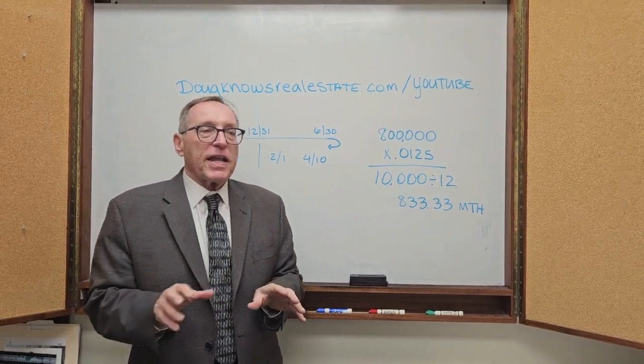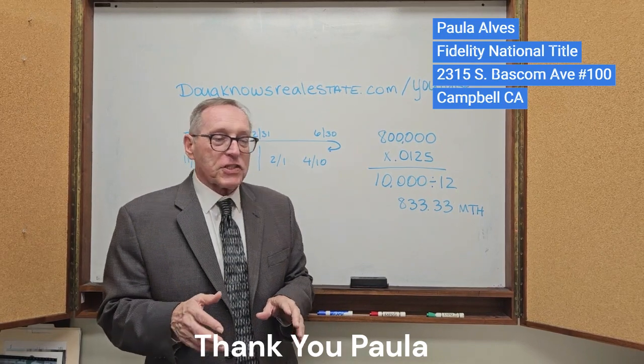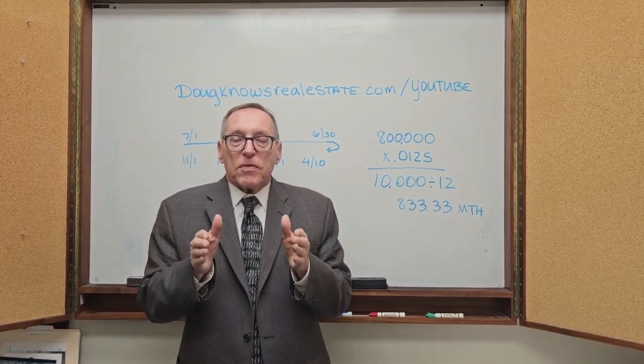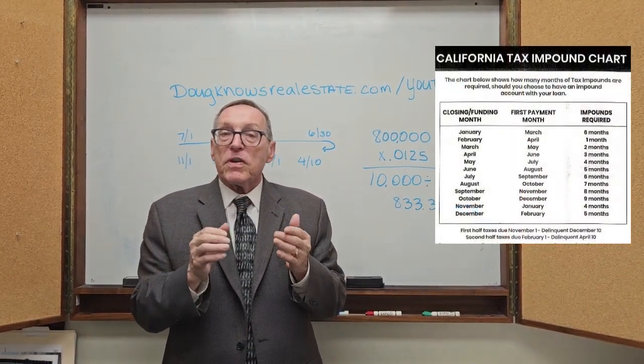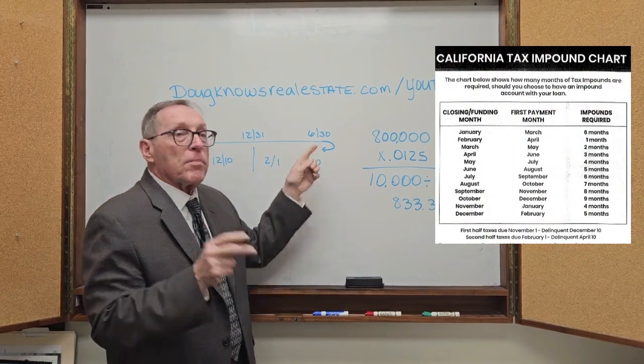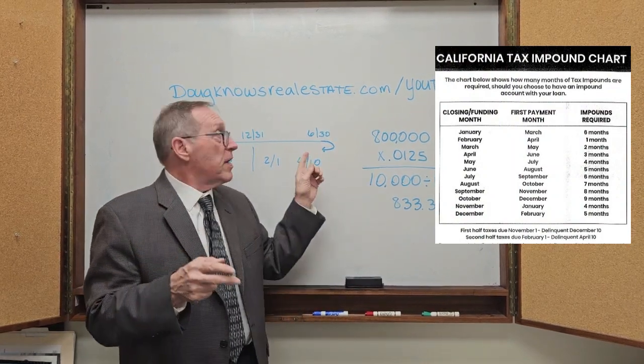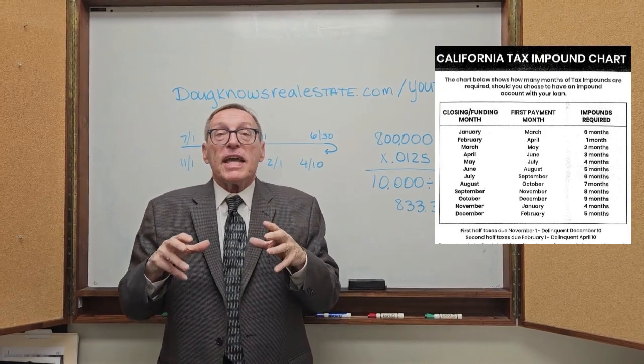And that changes every month. And I use Paula Alves at Fidelity Title. She's the one who helps me with this a lot. So it depends on the month that the purchase, the home is purchased, depending on how much impounds are set up. Right now we're in March. It's going to be a two month impound. It will be from here to here plus two months. And April will be here to here plus three months. And sometimes like in September, it's nine months.